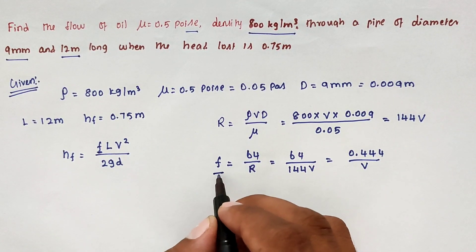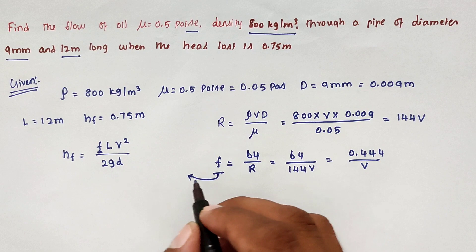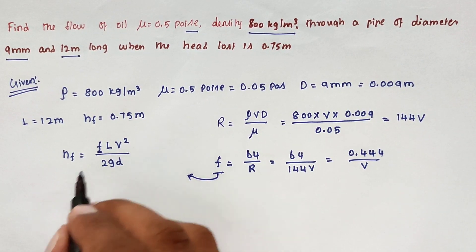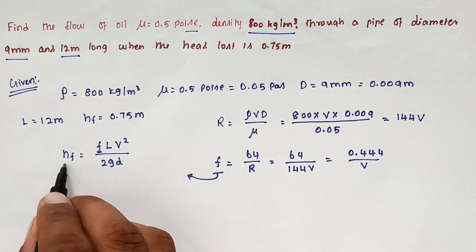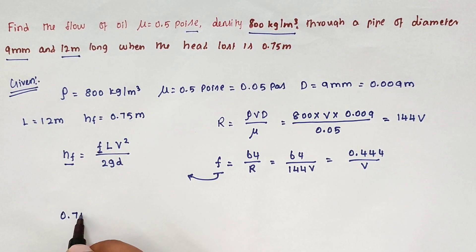We can substitute f value over here to get the value of V. Now we can substitute all the values. The head loss equal to 0.75 that is given